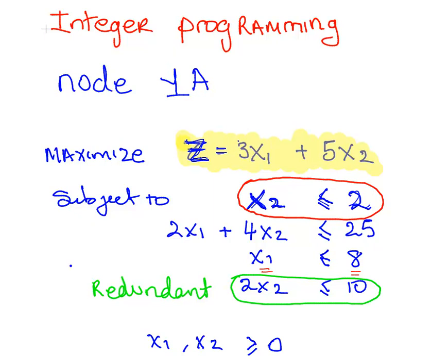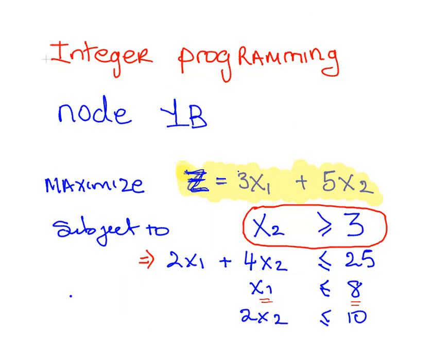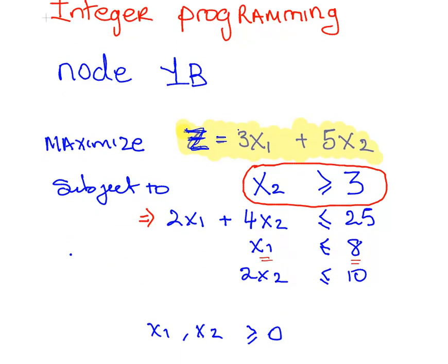Similarly for node 1B, where we impose the restriction x2 is greater than or equal to 3, that's how we would set out the constraints there. It doesn't make any of the other constraints redundant in this case. Essentially what it says is that the solutions have to be between 3 and 5 for x2, and x1 has to be less than or equal to 8. Additionally, 2x1 plus 4x2 has to be less than or equal to 25.